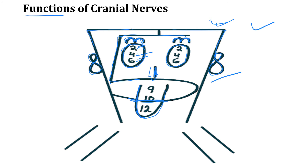Now we draw the tongue and write 9, 10, and 12. Cranial nerve 9 is the glossopharyngeal nerve — a mixed sensory and motor cranial nerve. Its sensory functions include somatic sensation and taste to the posterior one-third of the tongue. Its motor function is responsible for swallowing.